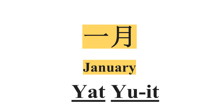Next we will move on to learning the months. 现在我们来分享关于月份。We have January — 一月. The pronunciation is 一月. 一 is 'one' and 月 means 'month', so the direct translation is 'first month' — 一月.